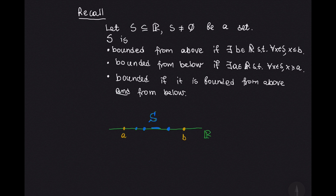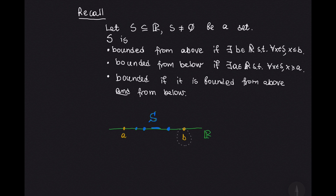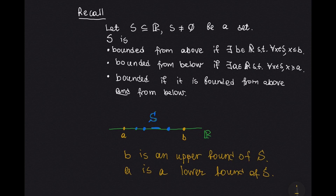To recall what that really means, let us look at this set, which consists of three points and an interval — a subset of real numbers on the real line. Every element of the set S lies to the left of the number B, so B is an upper bound of S and S is bounded from above. Every element of S lies to the right of number A, so A is a lower bound of S and S is bounded from below.